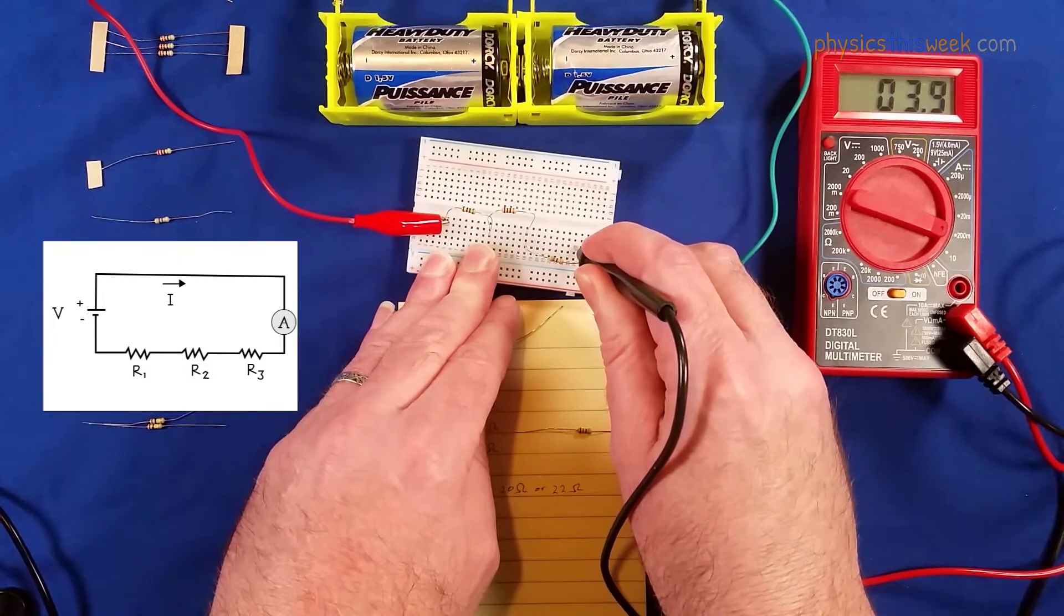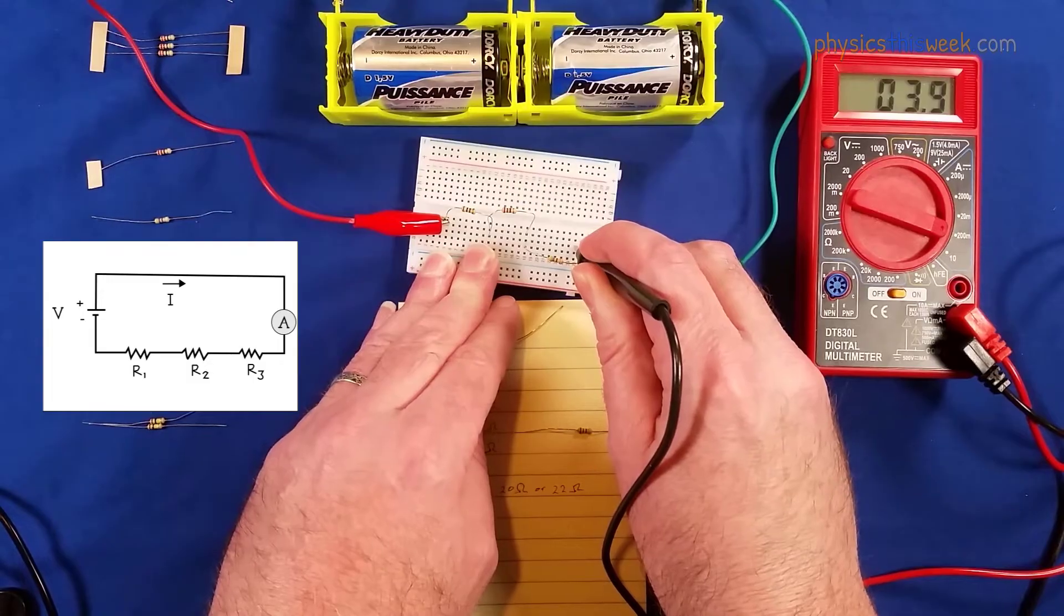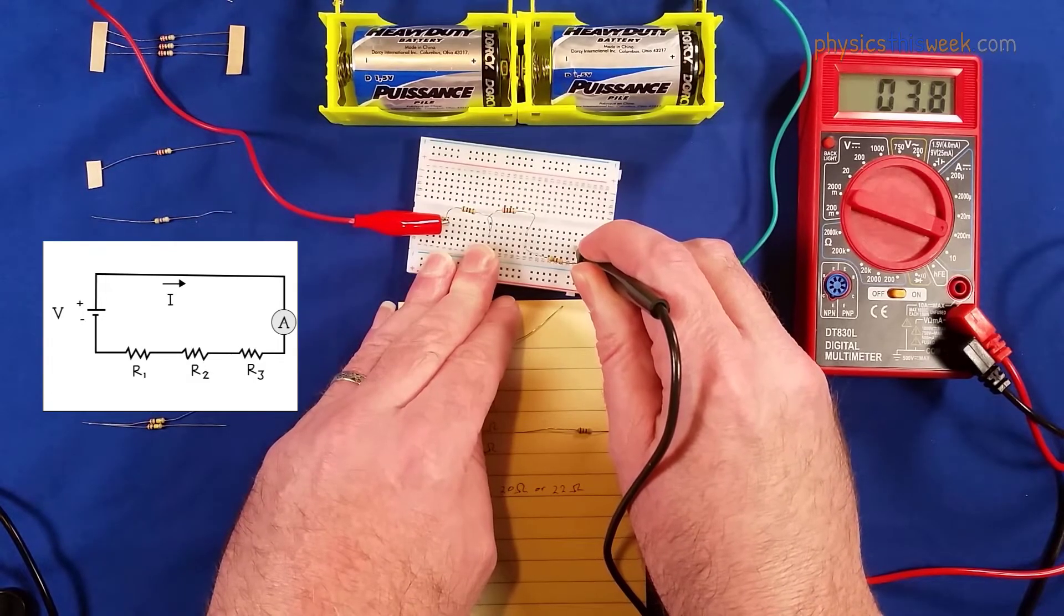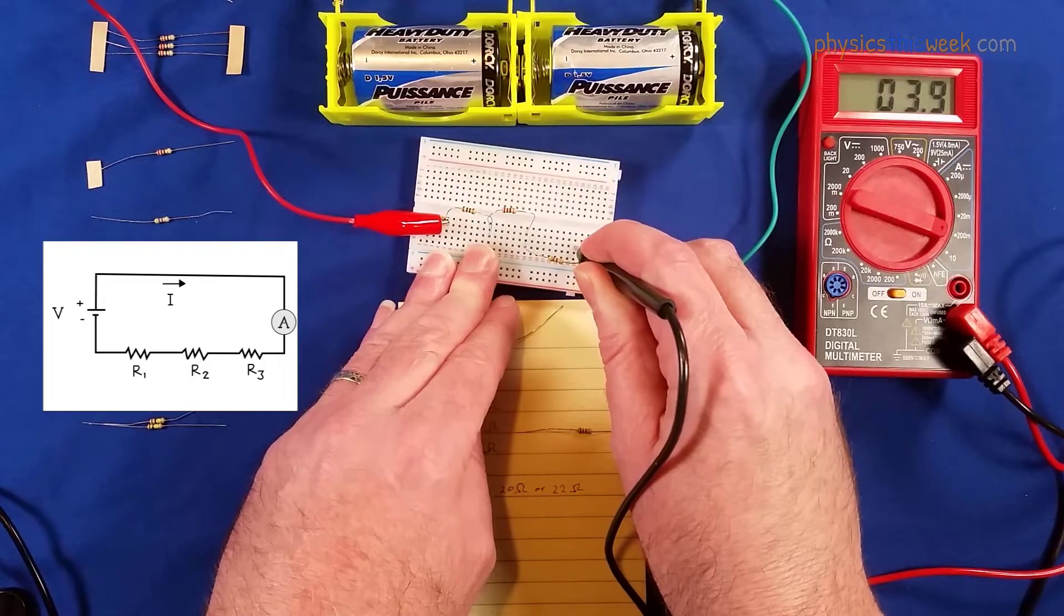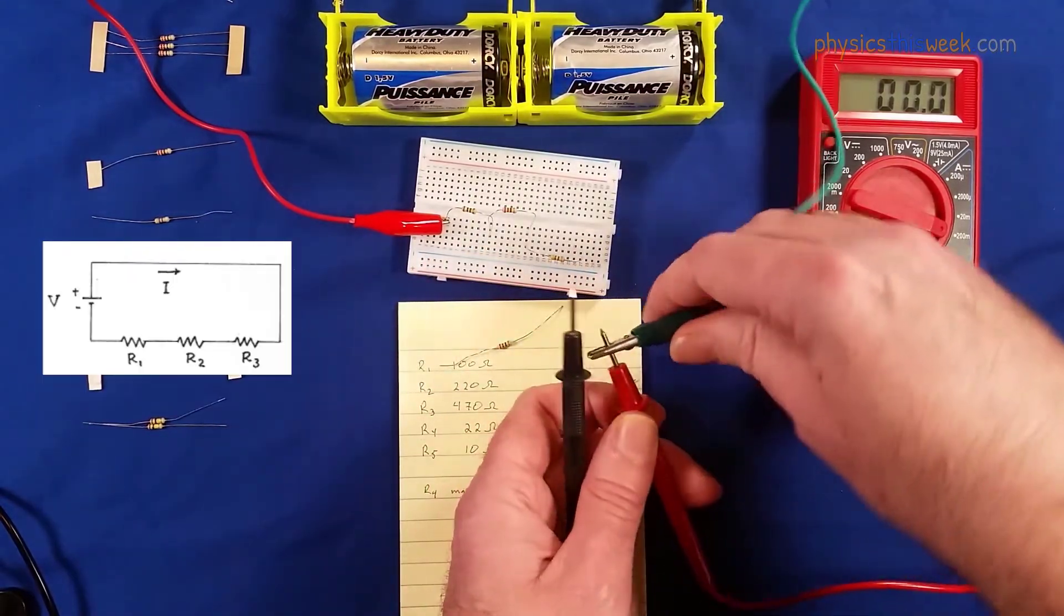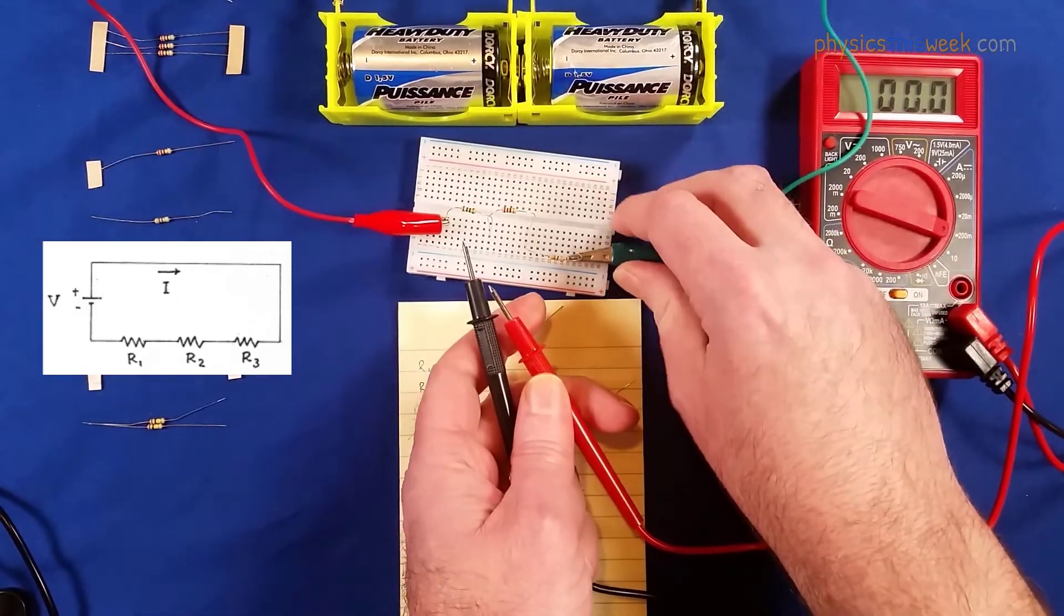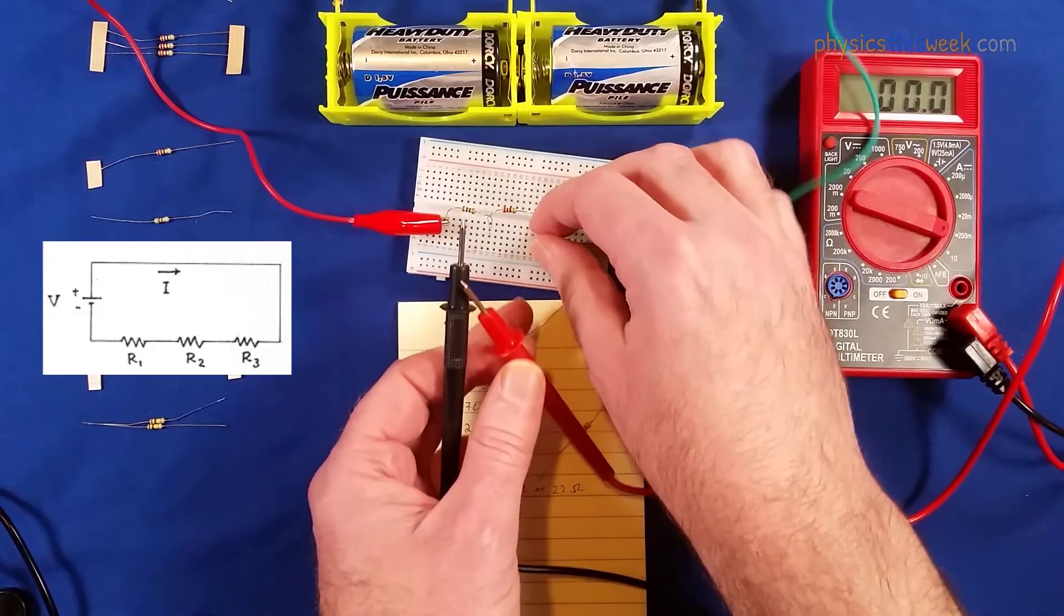So that is in milliamps, so that looks like 3.9 to me. Okay, now this is where this part gets tricky. I now need to move these so that they're beside each other but not in the same